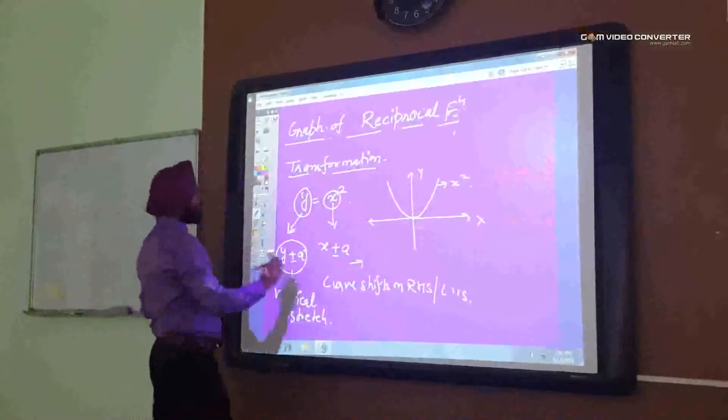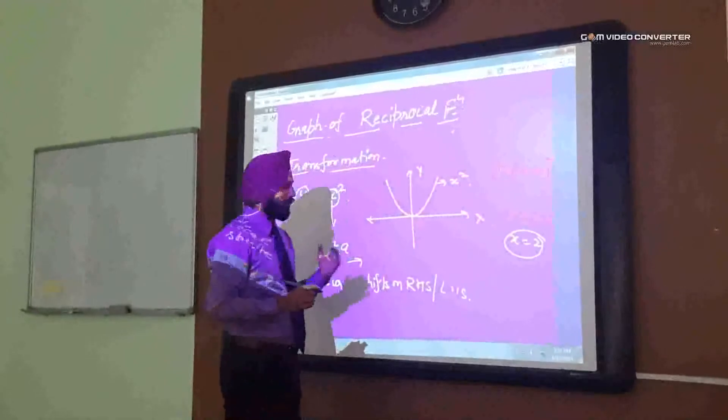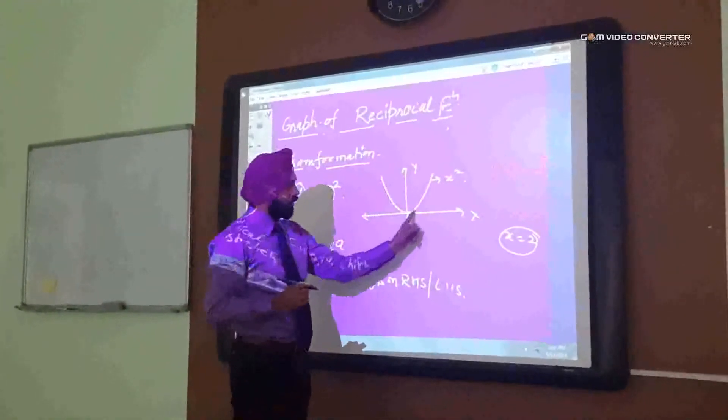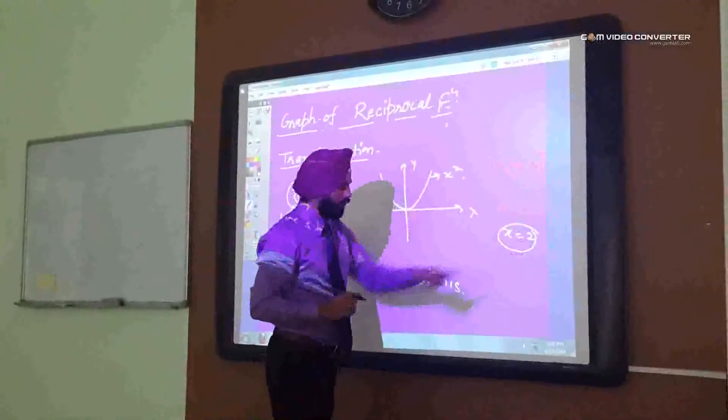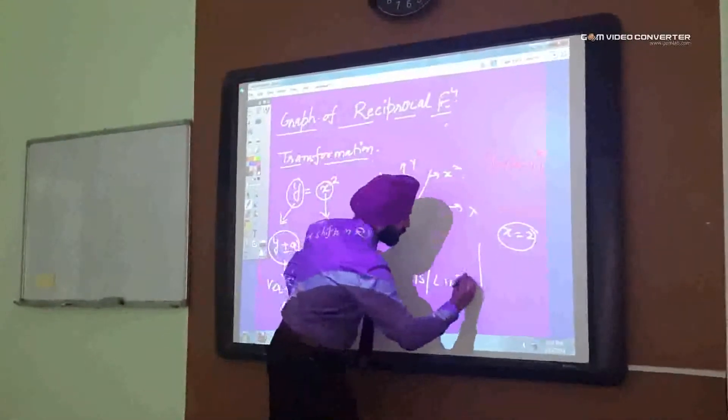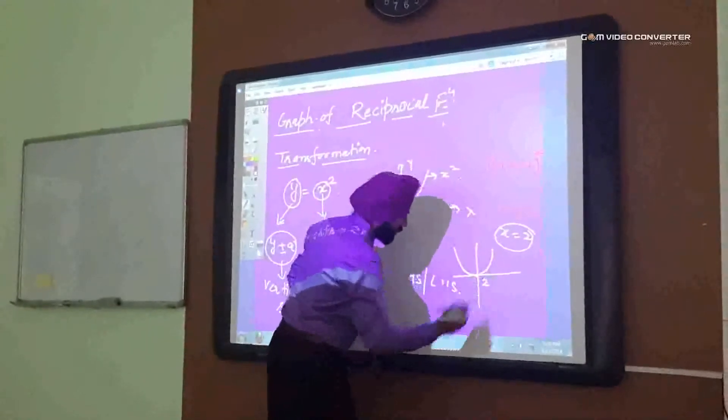So, for x minus 2 equals to 0, so x equals to 2. It means now the curve will touch not 0, but at 2. So, if you plot this curve, so it is not 0, it is 2.